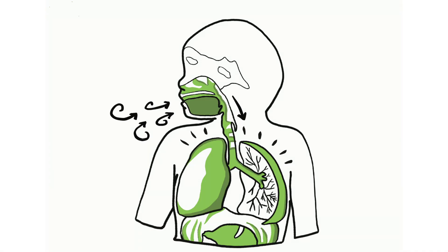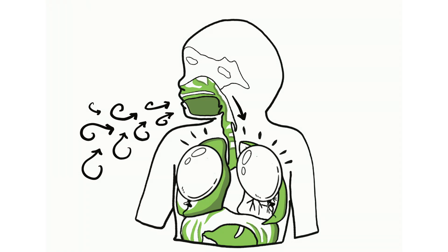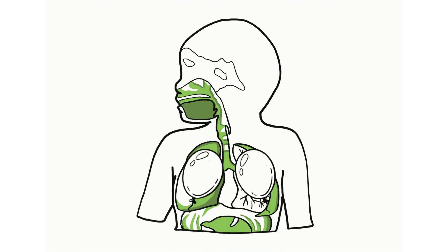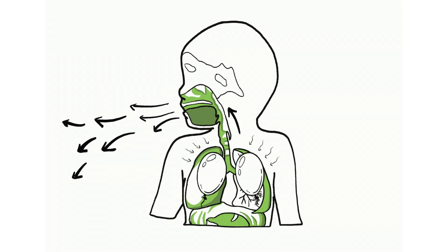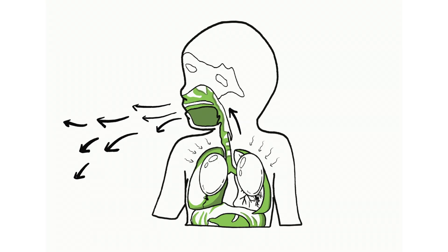When we inhale, the lungs inflate and are at a positive pressure, similar to the balloon. When healthy lungs exhale, they stay slightly inflated with residual air, which makes it easier for them to reinflate during inhalation. This residual air is the reason why you can always blow out a little bit more even after you have exhaled.